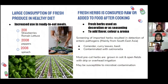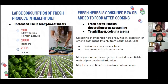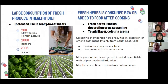I will be talking about new food trends. The first is the large consumption of fresh produce in healthy diets and fresh herbs consumed raw or added to food after cooking. The increased use of fresh produce in ready-to-eat meals — for example, healthy salads — caused outbreaks in 2001 from strawberries and romaine lettuce. There was a Salmonella outbreak, and in 2008, peppers caused an E. coli outbreak. In 2006, there were Salmonella outbreaks in the US from spinach in ready-to-eat meals.